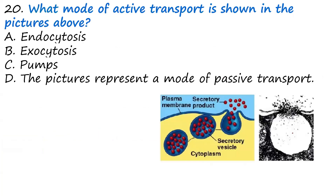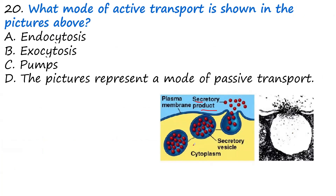Question twenty: What mode of active transport is shown in the picture? Looking at the picture, there is a plasma membrane with a secretory product that binds to the membrane, which then invaginates and dissociates from the cell membrane, moving the substance into the cytoplasm. This process is described as endocytosis — an example of bulk transport where substances move across the cell membrane. The answer is D.